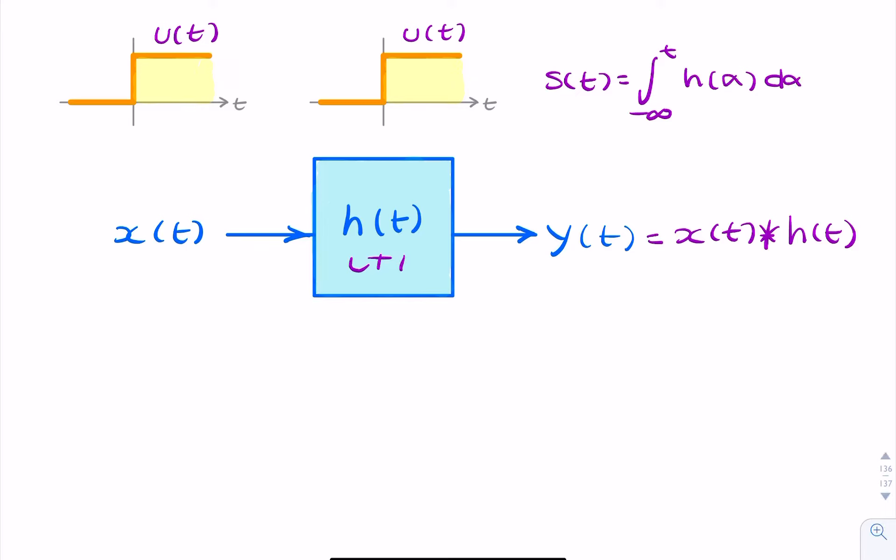So we could do either. We could either integrate the impulse response or we could find the convolution of the impulse response with the input. So here I will do both. I will show you how to do the convolution integral and the normal integration, and you should get the same answer.